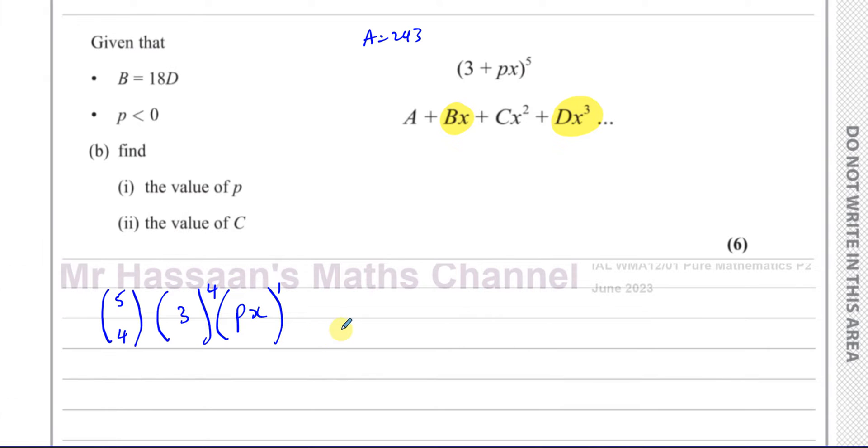5C4 gives you 5 and so does 5C1. So this is going to give us 5 times 3 to the power of 4, which is 81, times px. So that's going to be 405px. So we can say B is equal to 405 times p.